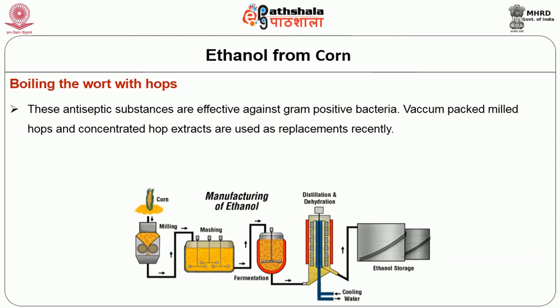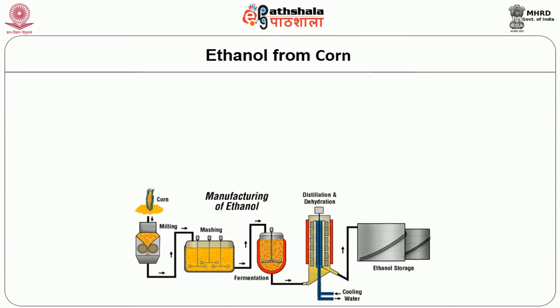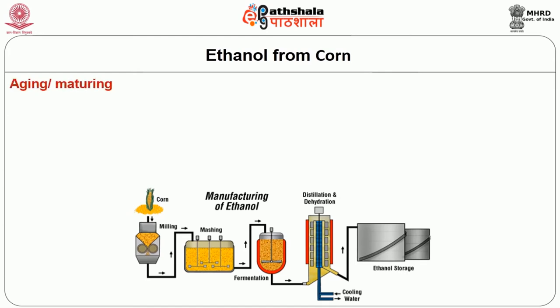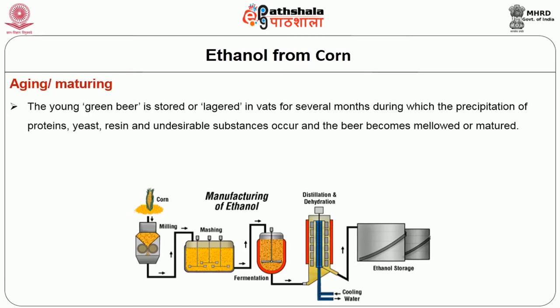These antiseptic substances are effective against gram-positive bacteria. Vacuum packed hop pellets and concentrated hop extracts are used as replacements nowadays. In fermentation, a special beer strain of Saccharomyces carlsbergensis is used for inoculation or pitching of the cooled wort. A heavy inoculum of about 1 lb per 31.5 gallons of beer is used. Different breweries employ different temperatures ranging from 3.3 to 14 degrees centigrade. Alcohol and carbon dioxide are formed during this process along with glycerol and acetic acid. As fermentation concludes, carbon dioxide decreases and the yeast flocculates and settles. The fifth step is aging or maturing, where the young green beer is stored for several months during which precipitation of proteins, yeast, resin and undesirable substances occurs and the beer becomes mellowed or matured.